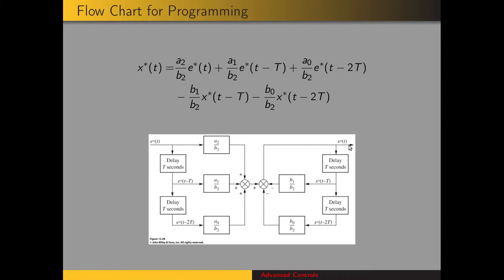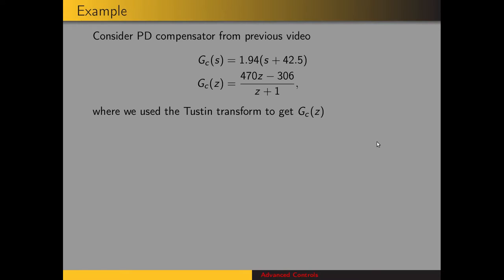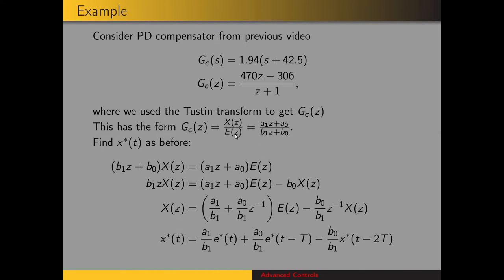The output is the sampled-time output of our compensator. Now we're going to look at an example — the PD compensator designed in the previous video. The transfer function in the S-domain was 1.94 times the sum of S and 42.5. We used the Tustin transform to get an approximation for GC of Z, and came up with an expression. We want to use what we've learned to find the sampled-time output of that compensator in terms of the error and previous values of the output, so that we could write a program for it. Rewriting in terms of coefficients A1, A0, B1, B0, here's GC of Z.